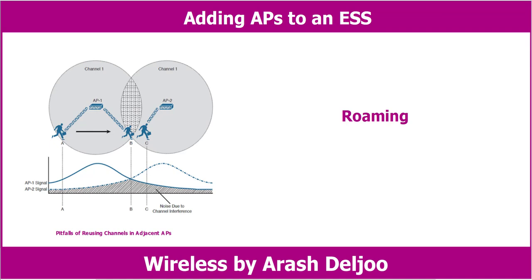It might seem intuitive to build a larger coverage area by using a single channel. Usually, this turns out to be a bad idea because the client may experience an excessive amount of frame collisions in the area between the two cells. Remember that the signal from an AP does not actually stop at the edge of the cell. Rather, it continues to propagate as it eventually dies off.